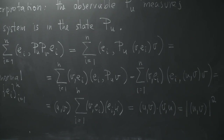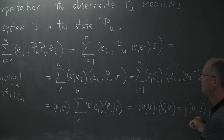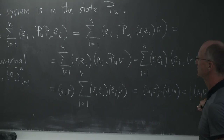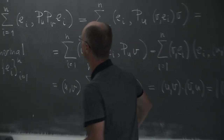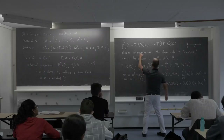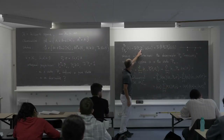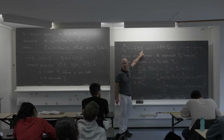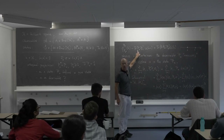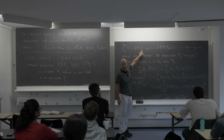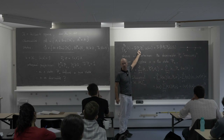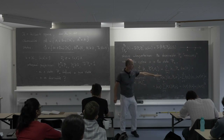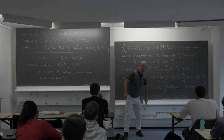That is the formula we already saw last time. It is the probability to measure 1 in the state P_v for the observable P_u. This means that if you start with state P_v and want to measure the probability to find your system in state P_u, that is precisely this formula |⟨u, v⟩|².